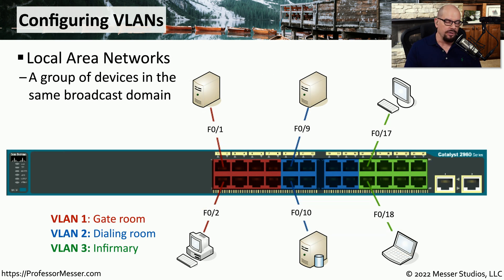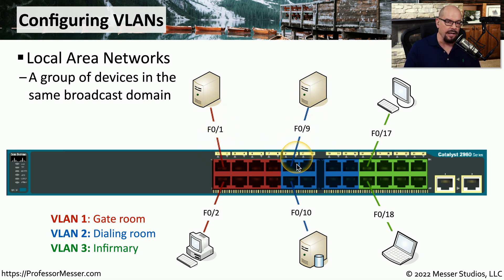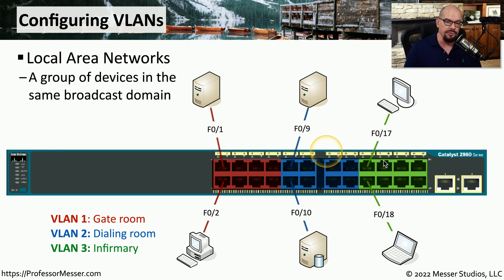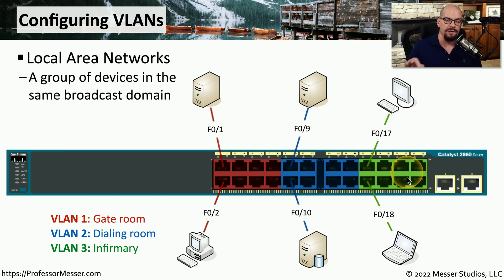Let's add even a third network. On this switch we've configured a red network, a blue network, and a green network, with different devices connected to these interfaces. As the network administrator, we've specifically configured the interfaces to match a certain network. If you're connected to port 1, you're on the red network; port 9 puts you on the blue network; and port 17 puts you on the green network. Instead of using colors, we associate a VLAN with a number — the red network may be VLAN 1, blue VLAN 2, and green VLAN 3. This makes it easier to manage the network and keeps costs lower by using a single switch instead of three separate switches.